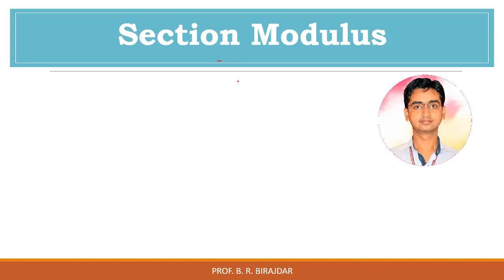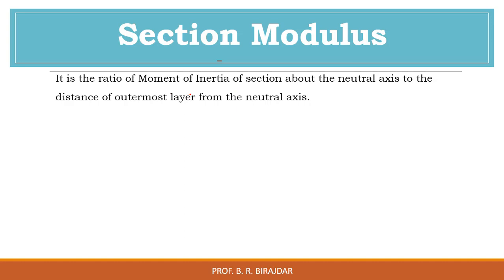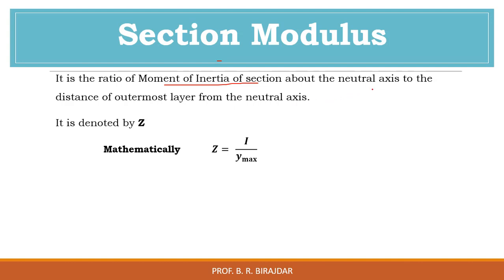We will see the section modulus — what it is and how to find it for different sections. It is a ratio of the moment of inertia of a section about the neutral axis to the distance of the outermost layer. Mathematically, we denote it by letter Z, where Z equals I divided by y, and I is the moment of inertia from the neutral axis, and y_max is the distance to the outermost layer.